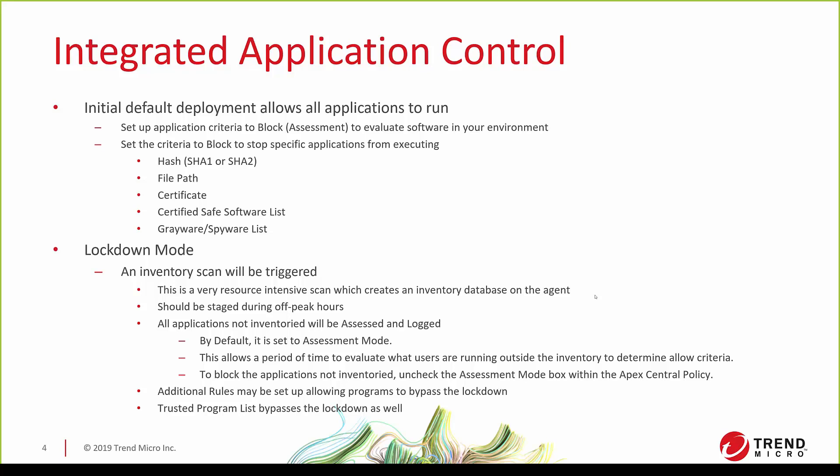If you select lockdown mode — which is the real beauty of application control — an inventory scan will be triggered. You don't want to do this to all machines and you especially don't want to do this during business hours. It's a very resource-intensive scan that goes through and finds all the applications on the current machine and creates an inventory database on the agent itself. All applications not inventoried at that time will by default be assessed and the logs will start coming in. We have widgets for it, and you can evaluate what users are doing outside of that inventory scan, what programs are trying to download and run. This gives you a period of time to evaluate that data and either create allow criteria for those specific programs or determine it's time to lock it down. Then you just turn off the assessment mode via checkbox, redeploy the policy, and it's done — they can't run that application anymore.